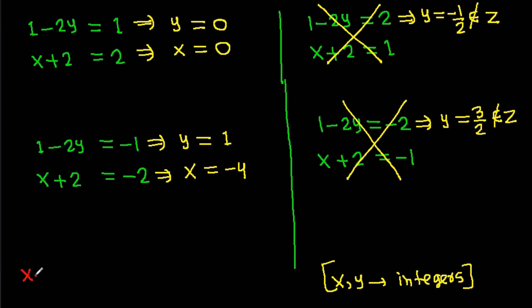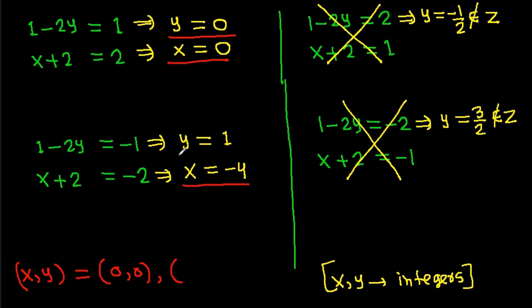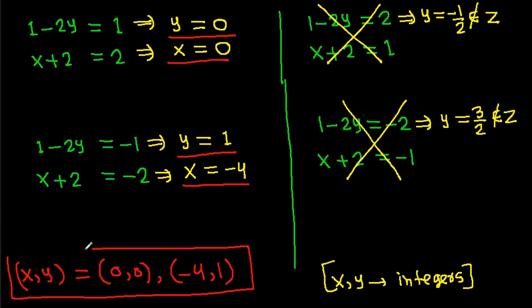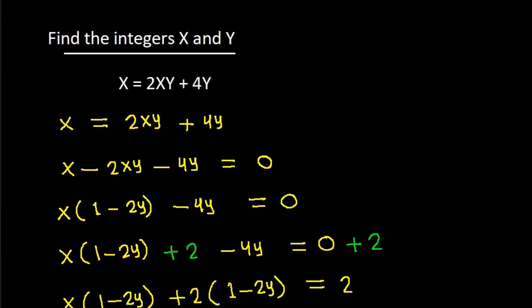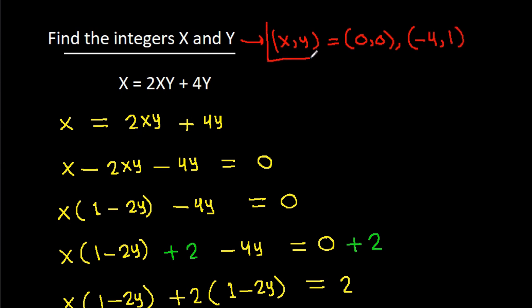So we get the solutions: (x, y) equals (0, 0) and (x, y) equals (minus 4, 1). These are the two integer values of x and y that satisfy the given equation.